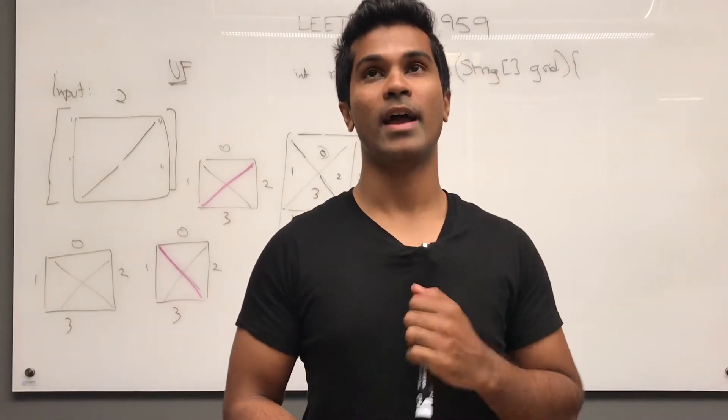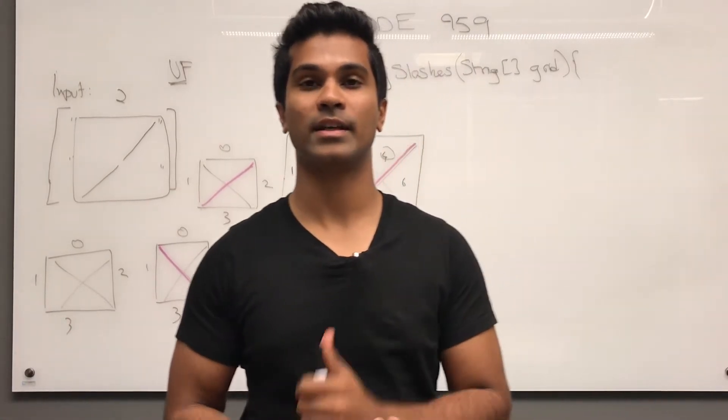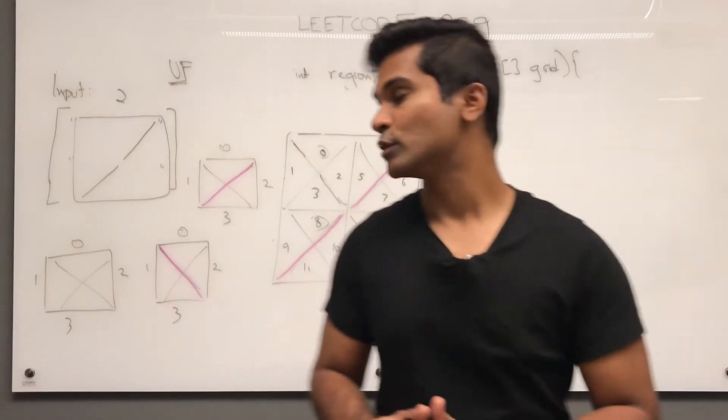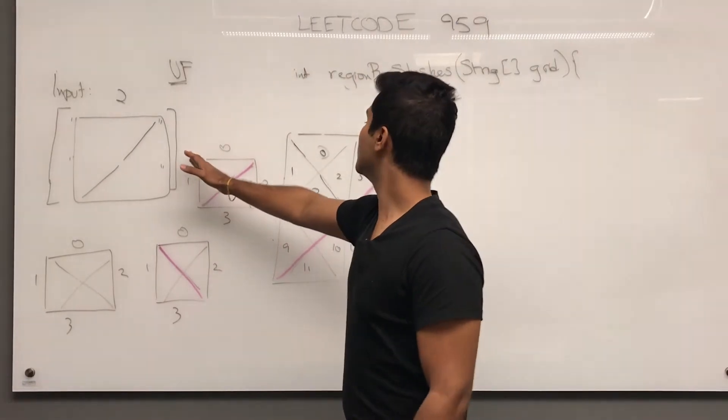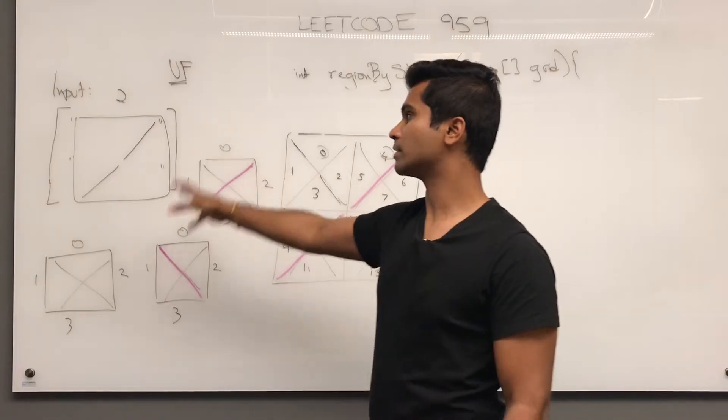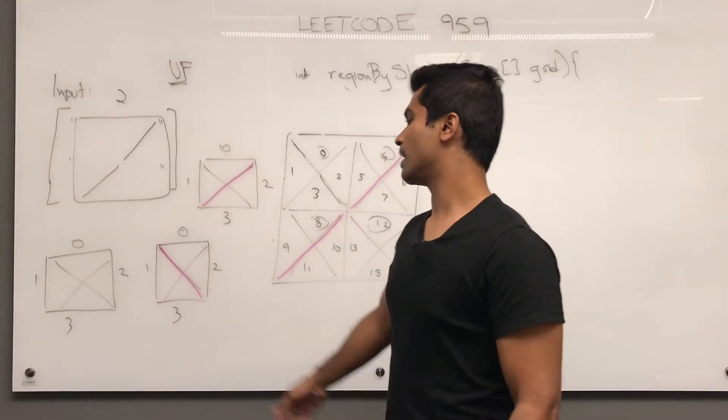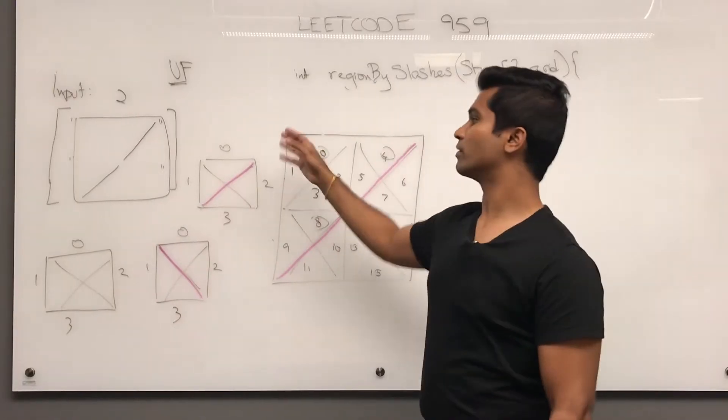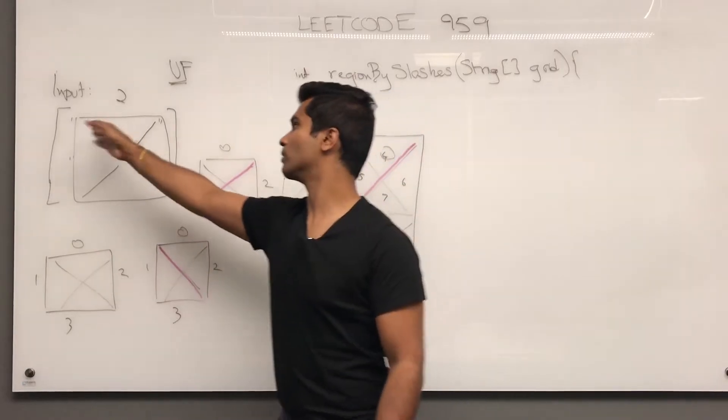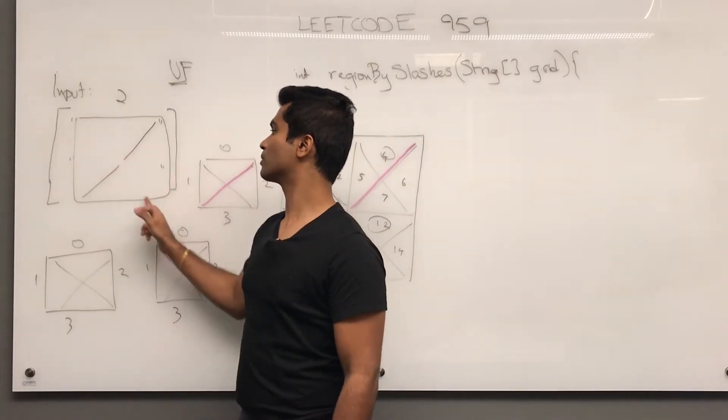Now this is a union find and disjoint set data structure problem. The input is an array of strings that's supposed to represent a grid and the output needs to be an integer to find out how many regions we have overall. So this is one connected component and this one connected component.